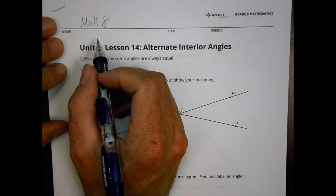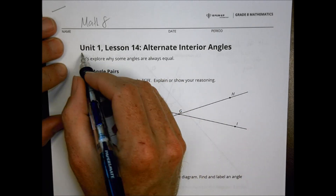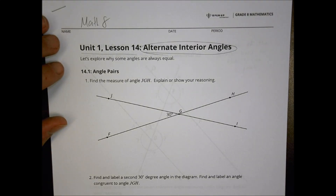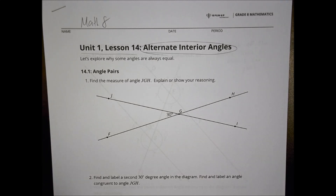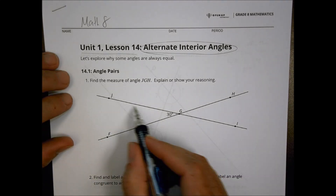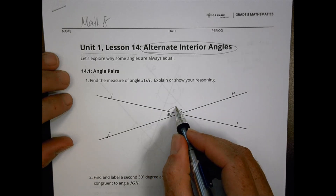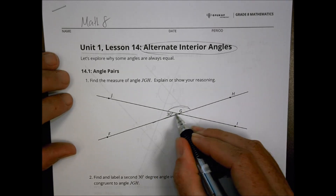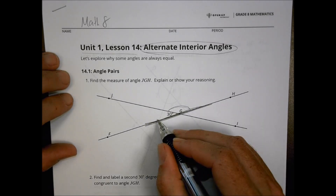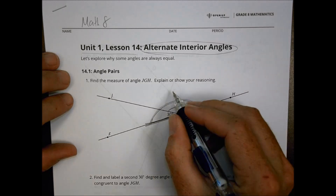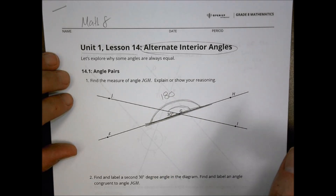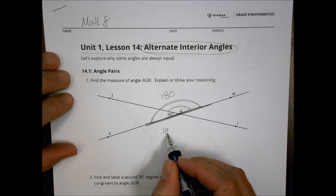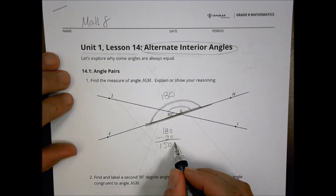We're looking at Math 8 today, lesson 14 unit 1: alternate interior angles. It's about looking at why some angles are always equal to one another. The first thing is to find the measure of angle JGH. From a previous lesson on translations, we said a straight line is 180 degrees. So 180 minus 30 tells us what remains is 150 degrees.